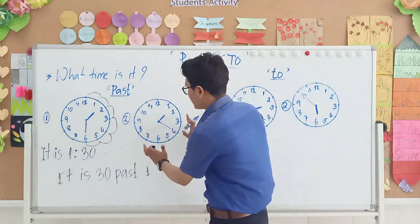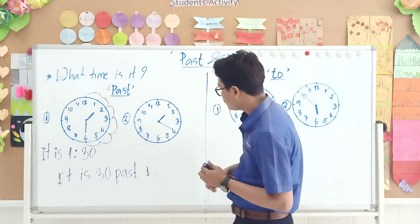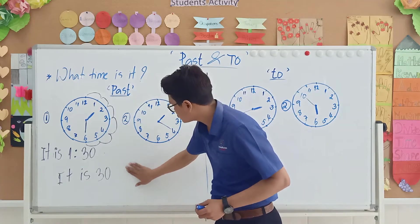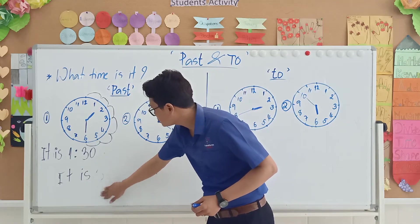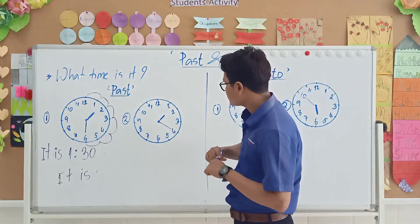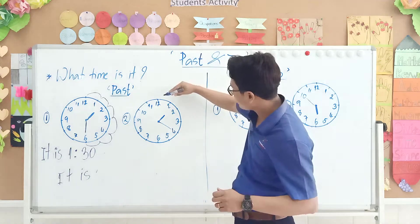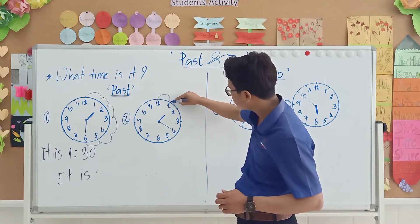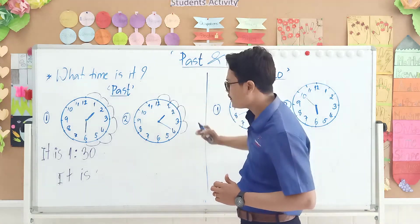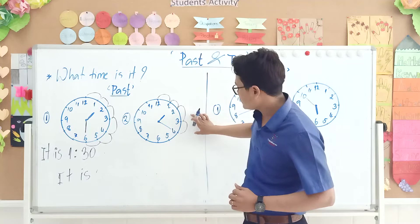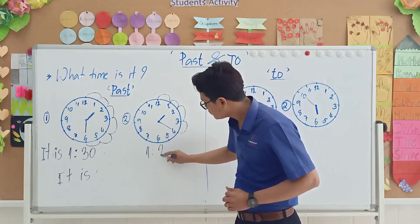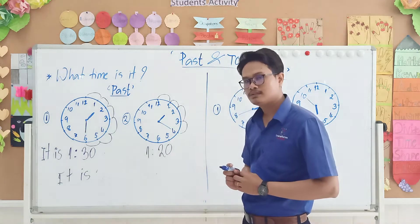Number two, if you look at number 2 all together. I will do this one to make sure you understand. So number 2, what time is it right now? Count with me, from here to here, 5, 10, 15, 20. So write down 1 and 20 minutes.